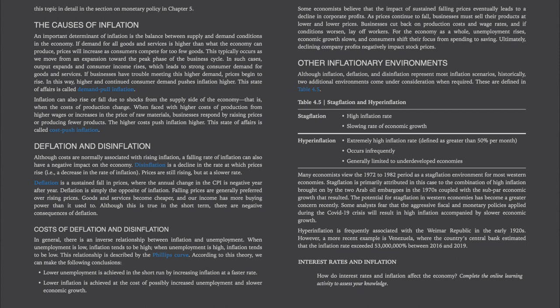The Cost of Deflation and Disinflation. In general, there is an inverse relationship between inflation and unemployment — this relationship is described by the Phillips curve. When unemployment is low, inflation tends to be high; when unemployment is high, inflation tends to be low. According to this theory, lower unemployment is achieved in the short run by increasing inflation at a faster rate, and lower inflation is achieved at the cost of possibly increased unemployment and slower economic growth. Some economists believe that sustained falling prices eventually leads to a decline in corporate profits. As prices continue to fall, businesses must sell their products at lower and lower prices, cut back on production costs and wage rates, and if conditions worsen, lay off workers. For the economy as a whole, unemployment rises, economic growth slows, and consumers shift their focus from spending to saving. Ultimately, declining company profits negatively impact stock prices.